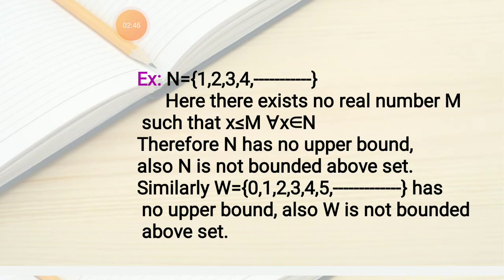One more example: let N = {1, 2, 3, 4, ...}, the set of all natural numbers. It is an endless set. There exists no real number M such that X ≤ M for all X belonging to N. Therefore N has no upper bound, and because N has no upper bound, N is not a bounded above set.